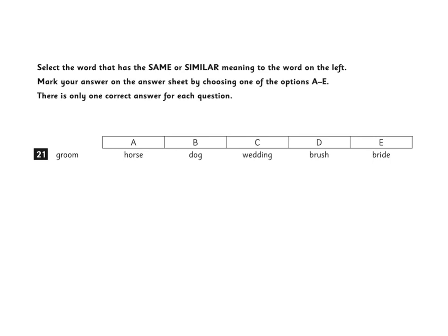Select the word that has the same or similar meaning to the word on the left. Mark your answer on the answer sheet by choosing one of the options A to E. There is only one correct answer for each question.